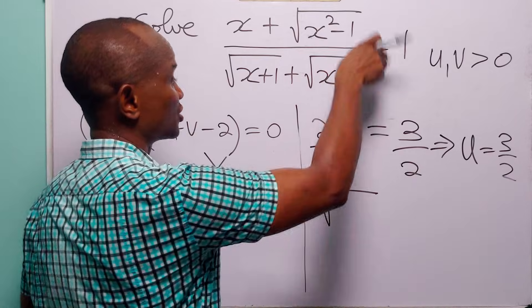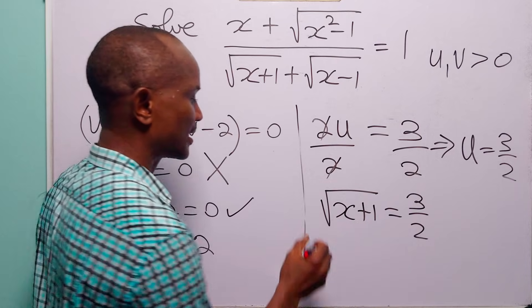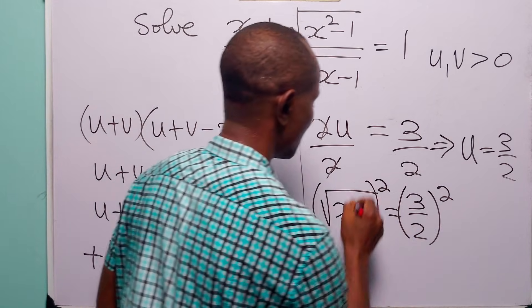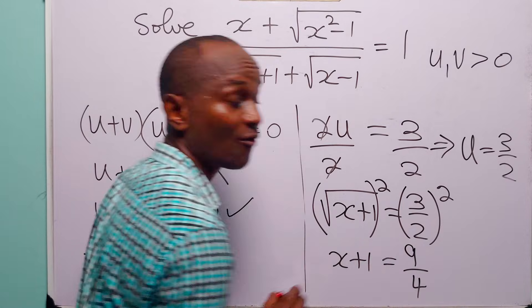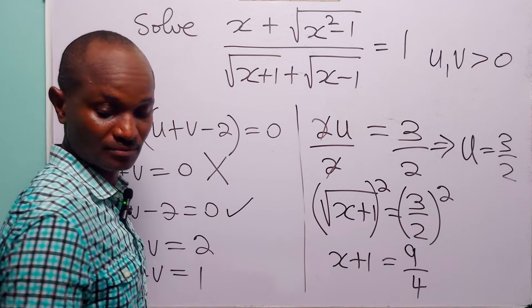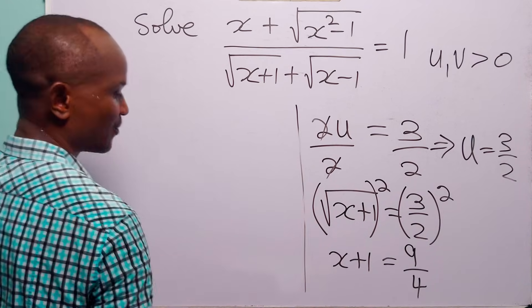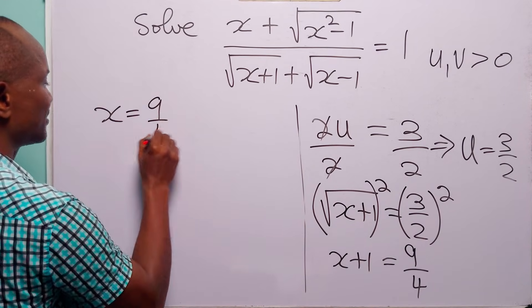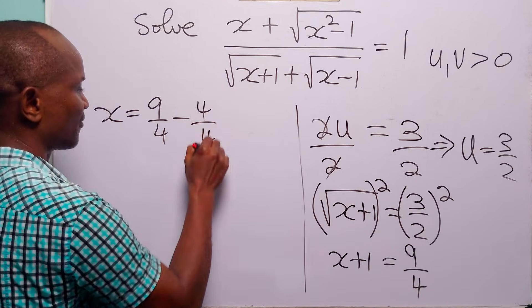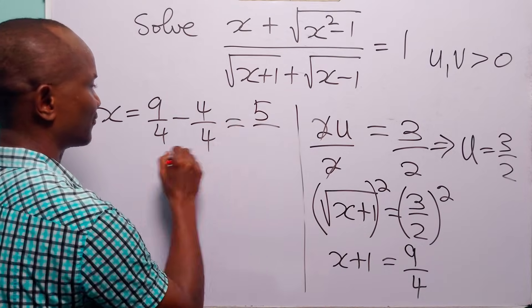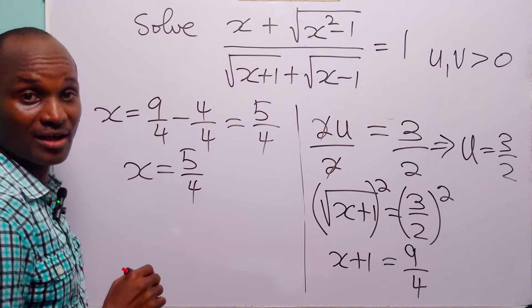Since u equals the square root of (x plus 1), squaring gives u squared equals x plus 1, so 9 over 4 equals x plus 1. Therefore x equals 9 over 4 minus 1, which is 9 over 4 minus 4 over 4, giving x equals 5 over 4.